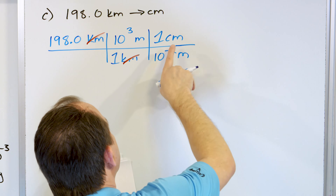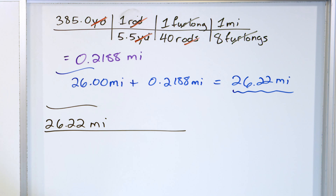Now this number — 26.22 miles — is the one I want to convert into the other units. First, convert to furlongs. We see that eight furlongs is one mile, so one mile goes on the bottom to cancel and eight furlongs go on top. So 26.22 times eight comes out to 209.8 furlongs. That's the first part.